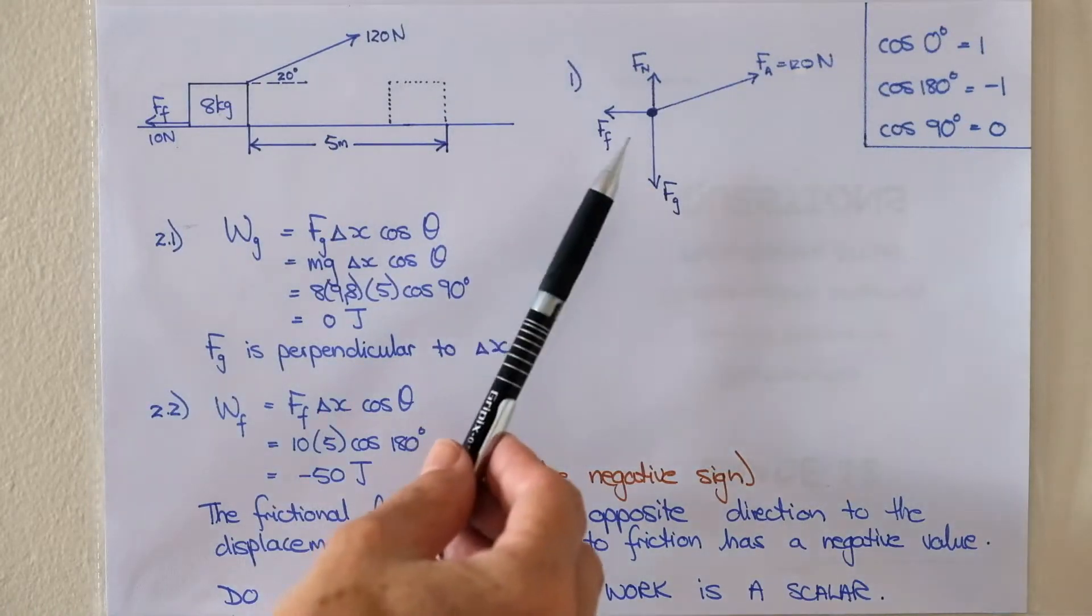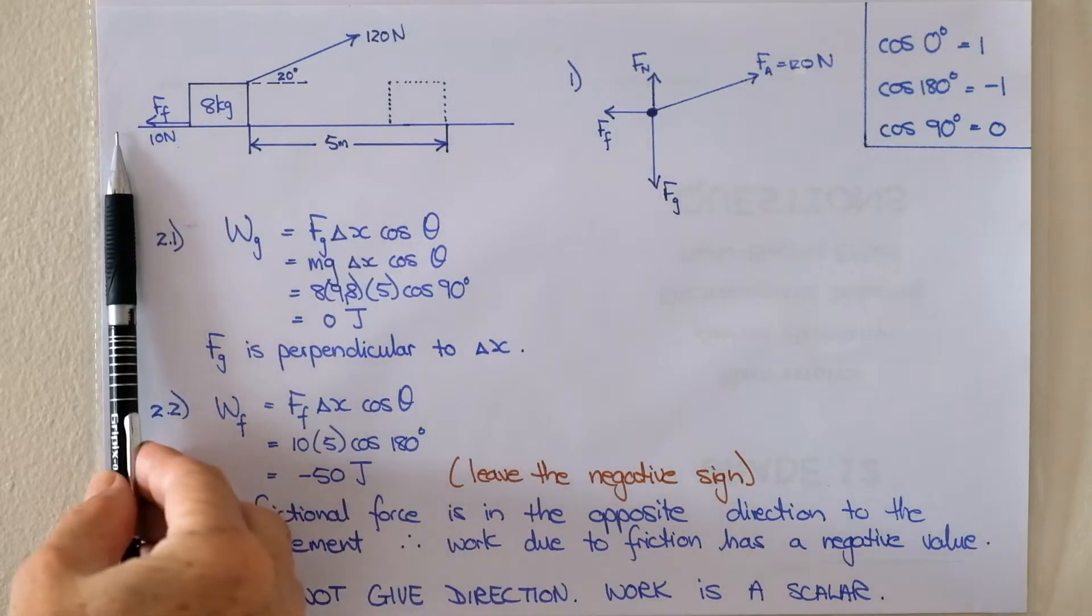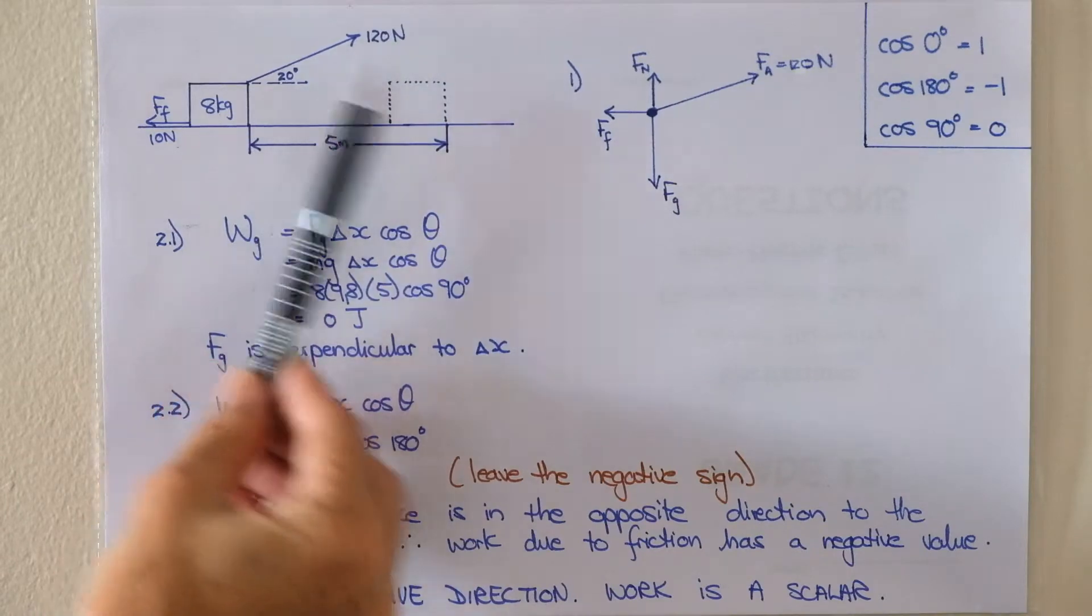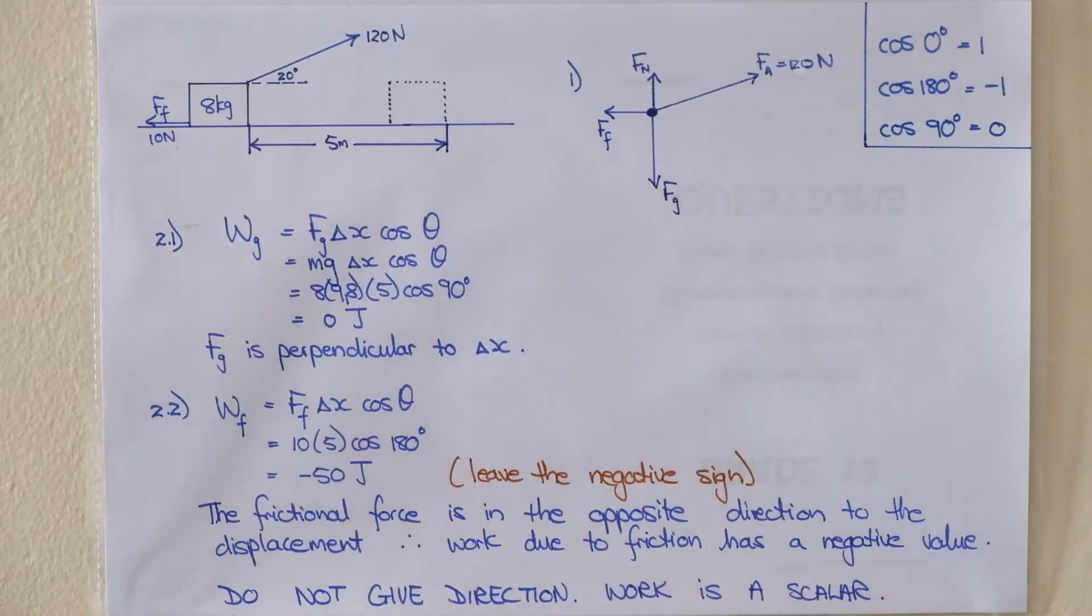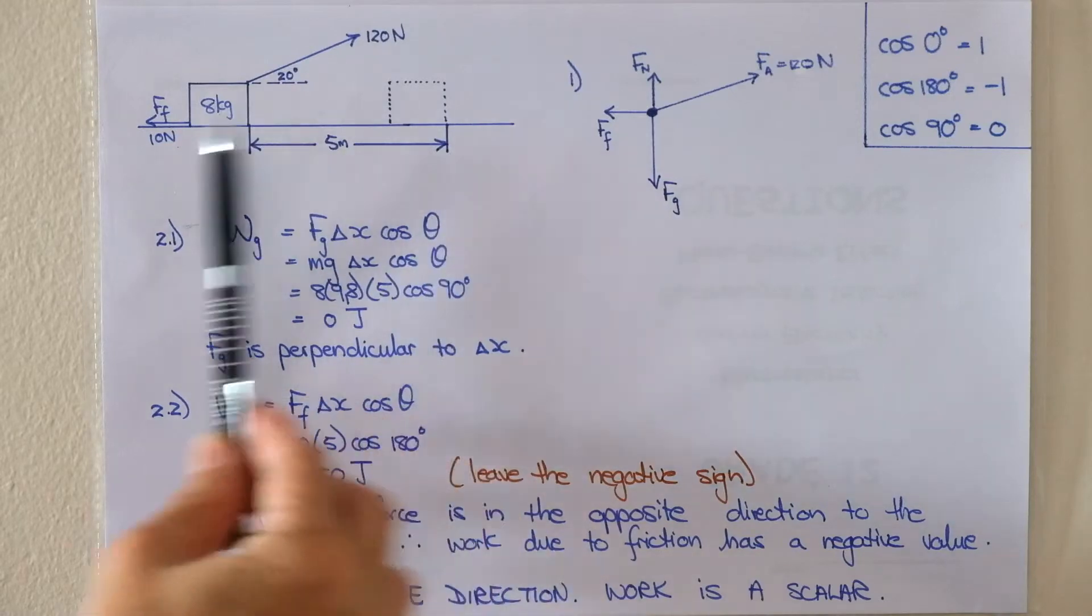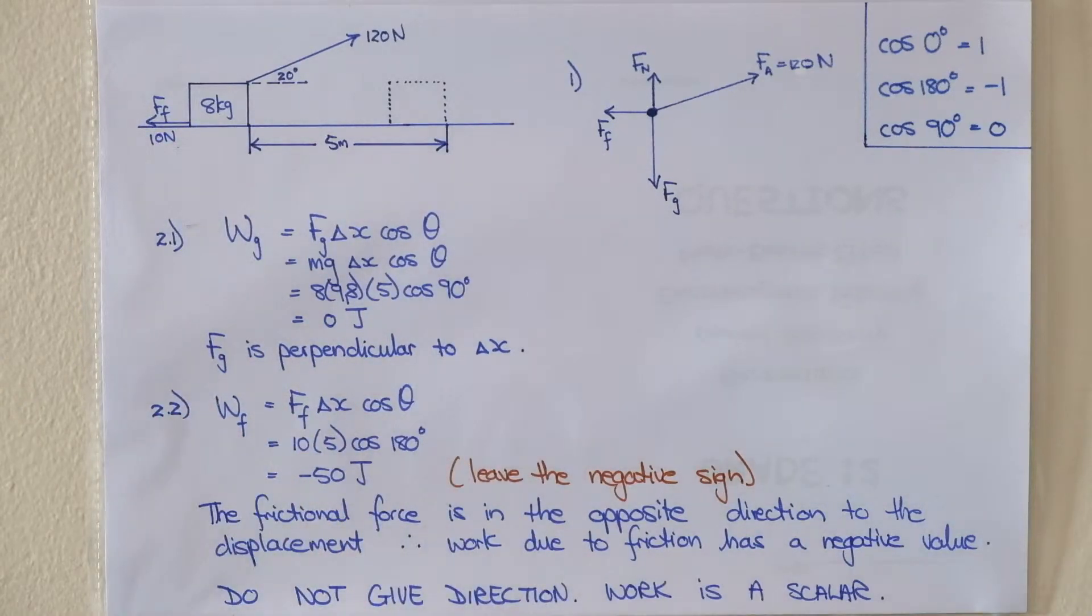So our free body diagram we've got our frictional force to the left because the box is being pulled to the right due to the applied force so the frictional force is to the left. Frictional force is always opposite to the direction of motion. We can see very clearly that the box is moving to the right so the frictional force will be to the left.